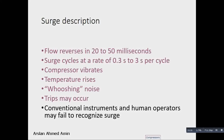Trips may occur — the tripping system may activate. If a vibration protection system is not installed on the compressor, tripping can still occur. Conventional instruments or human operators may fail to recognize surge. Therefore, we need a sensitive and intelligent control system to protect the compressor from surge.